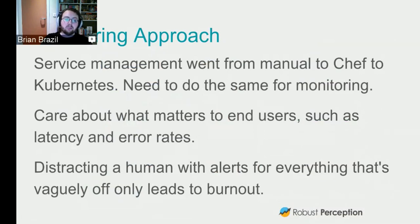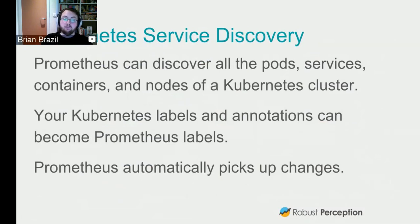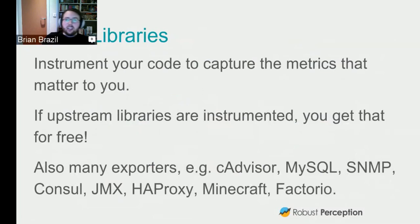In terms of integration into Kubernetes — and by extension OpenShift — Prometheus can discover all pods, services, and everything automatically from the Kubernetes cluster, using all the labels and annotations. Both Kubernetes and Prometheus have a label-based data model, so they mesh nicely. Prometheus will automatically pick up changes, so you can set it up once and have everything happen automatically. For your actual application, you can instrument your code to capture the metrics that matter — like how many times a cache is being hit, or how many paying versus non-paying orders there are.